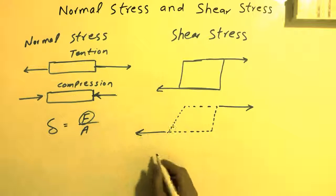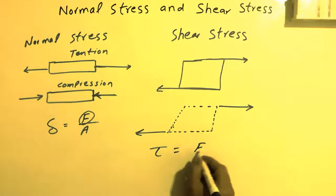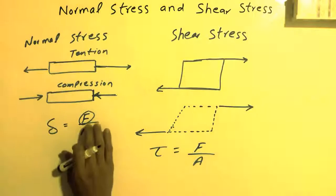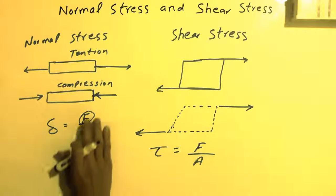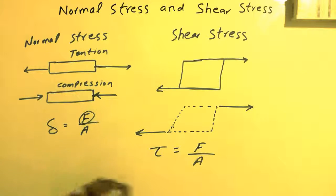Now the formula for shear stress, we have tau equals force over area (τ = F/A). If you see the previous one, normal stress, the formula is the same: force over area for shear stress as well. But there is a difference.